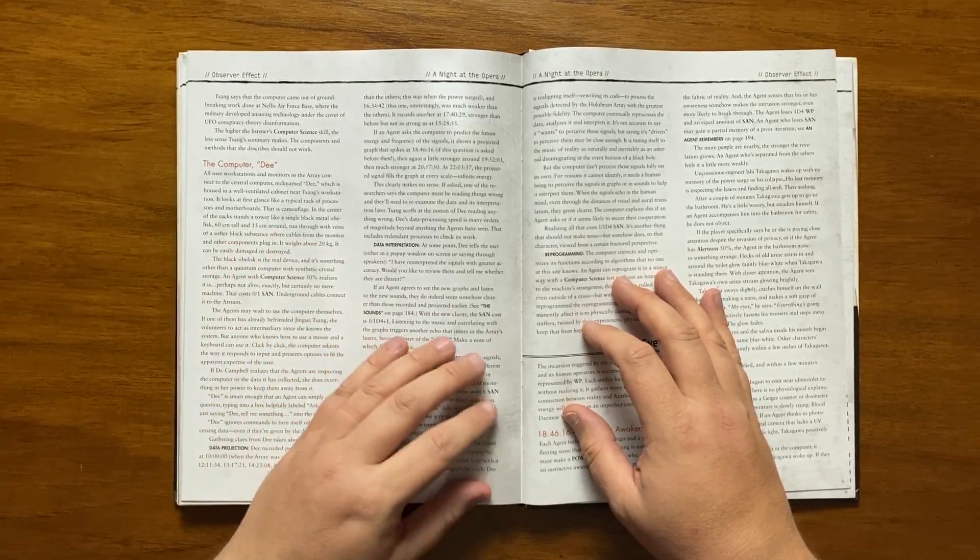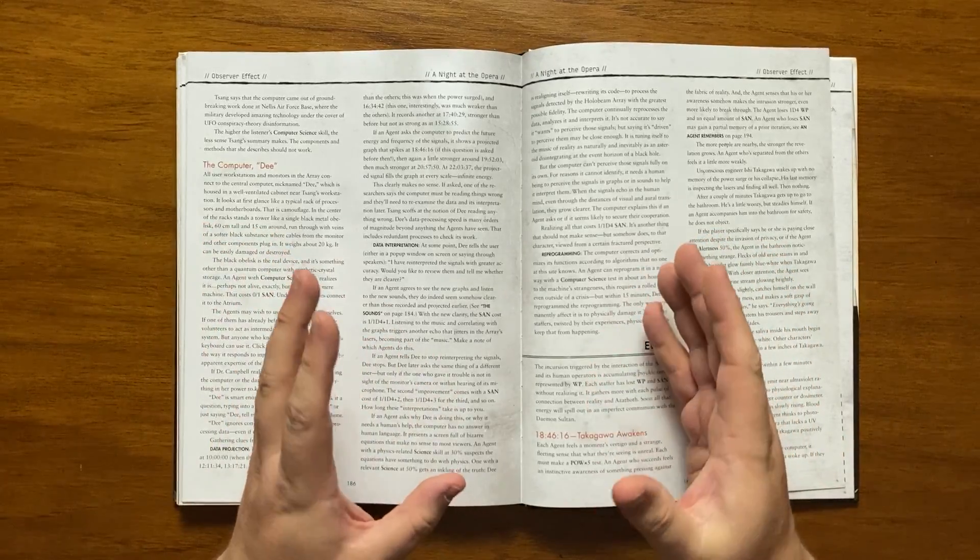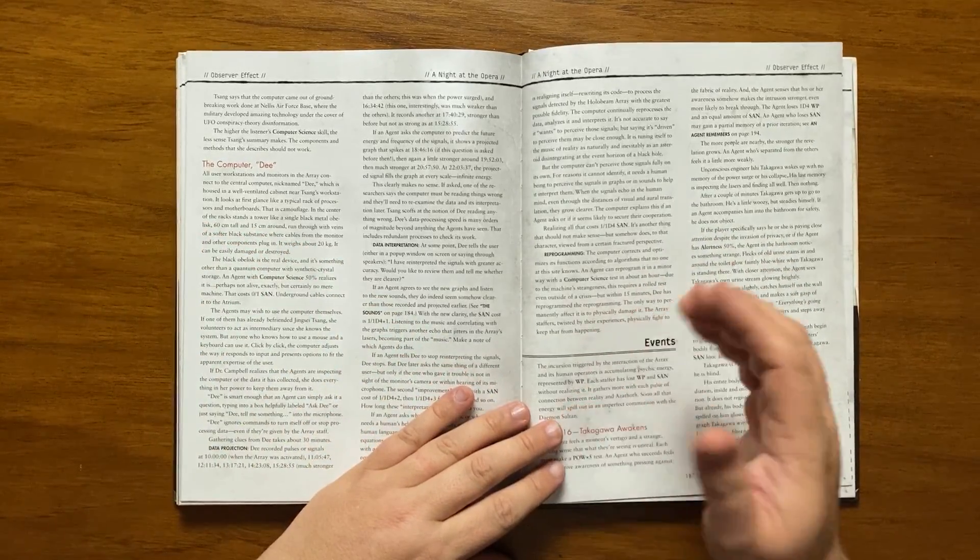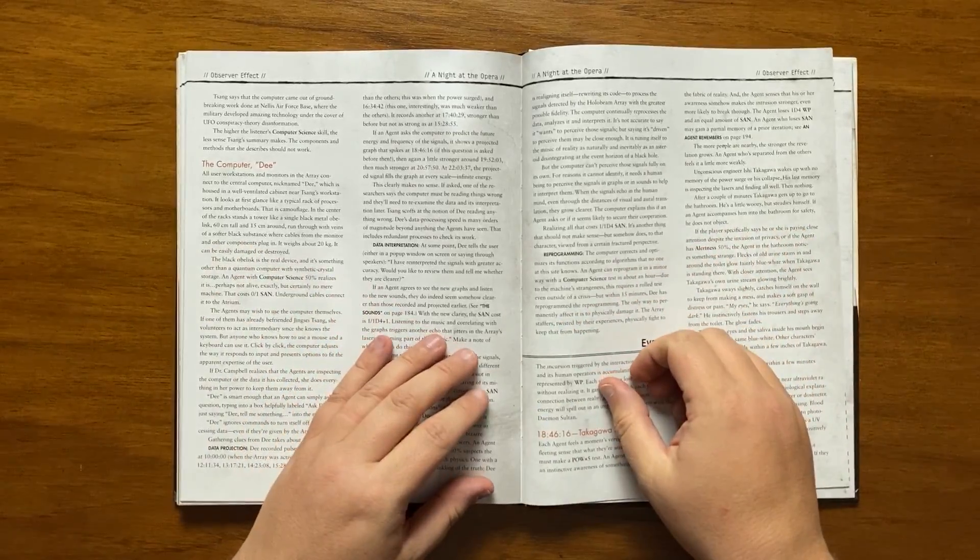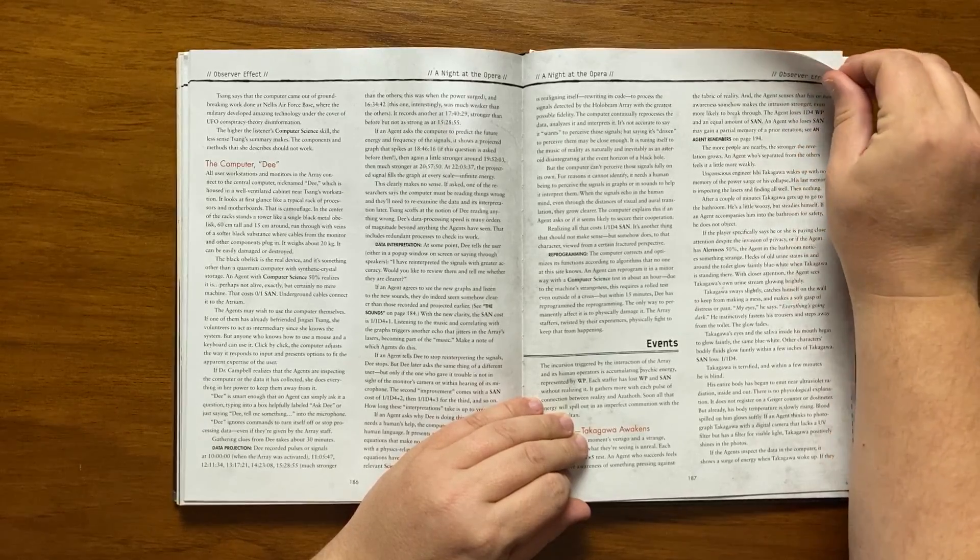D cannot interpret these signals on its own, it needs a human to perceive them as when the signals resonate in a human mind they grow clearer. D can be reprogrammed by someone with sufficient skill though those at the array will fight to stop them. We then move on to the events that happen at the array which should be played out as and when the appropriate time is reached.